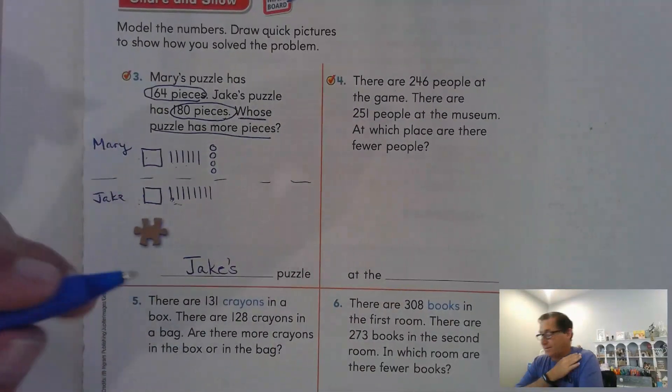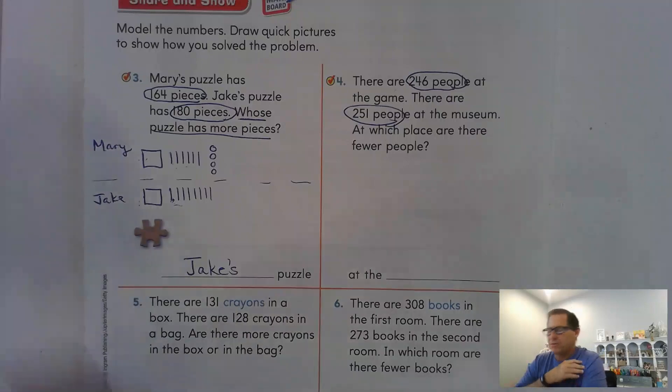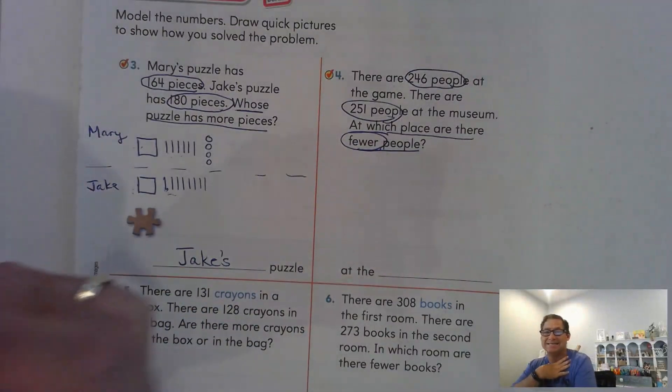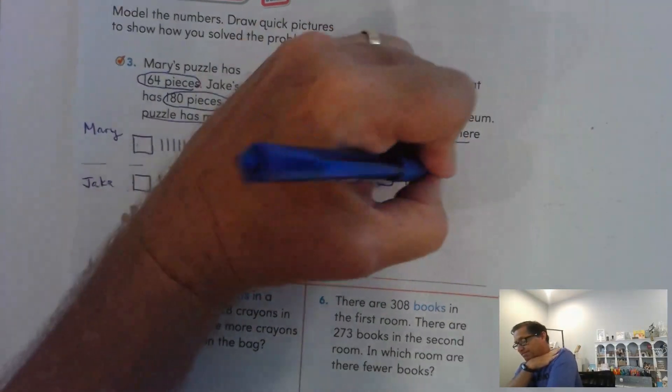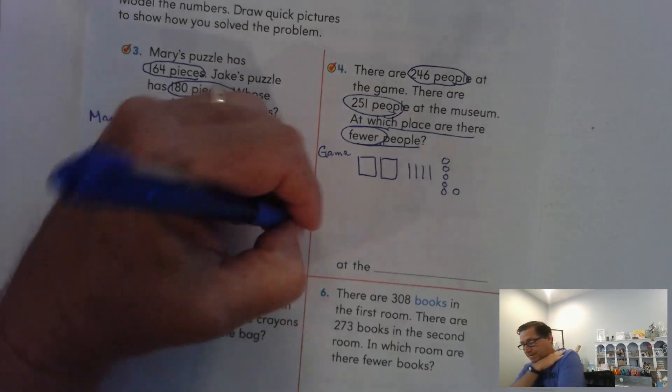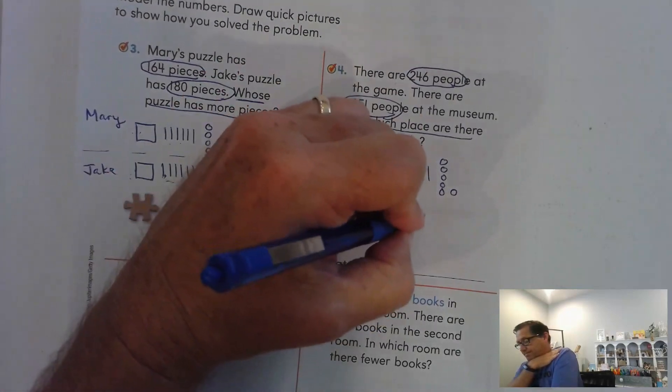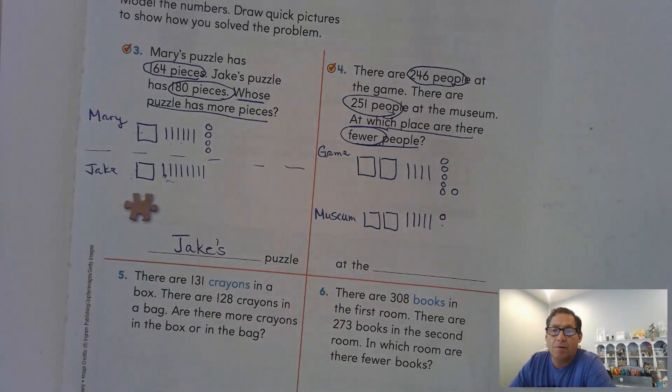Number four. There are 246 people at the game. There are 251 people at the museum. At which place are there fewer people? Fewer people. So I want the one that is less. So I'm going to say game. I'm going to draw a quick picture. So we have 246 people at the game. I'm going to identify the next one as museum. And there's 251 people at the museum.